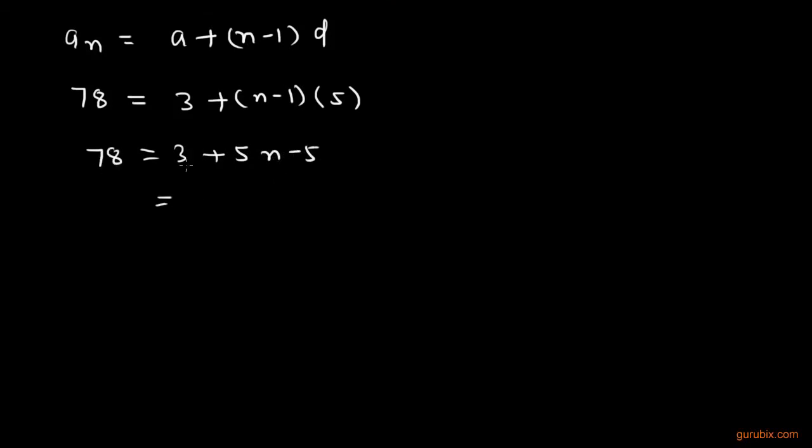If we subtract this positive 3 from this negative 5, we get -2 + 5N = 78. And now we get 5N = 80.